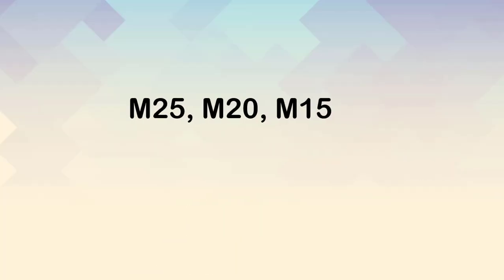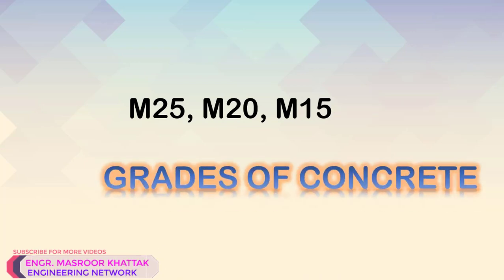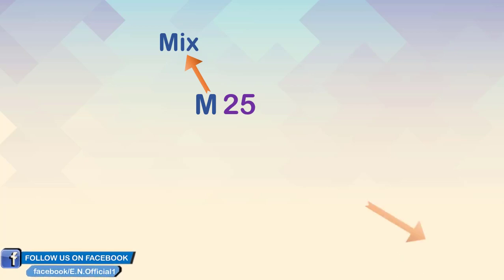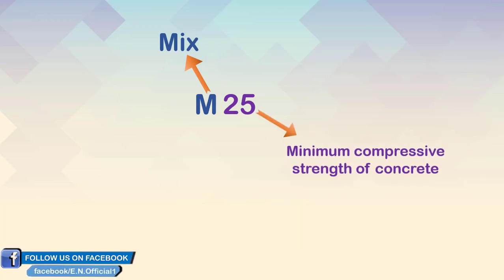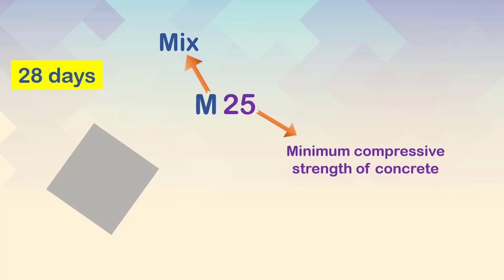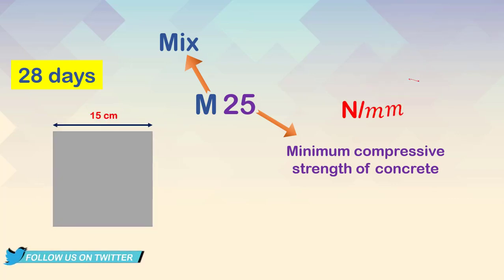M25, M20, and M15 are the grades of concrete. The grades of concrete are represented by a prefix followed by a number, where M stands for mix and the number denotes the minimum compressive strength of concrete at 28 days, expressed as Newton per mm².